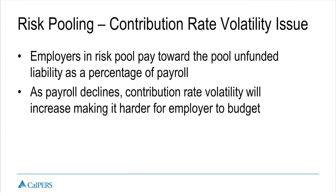The rate volatility issue arises because employers pay toward the risk pool's unfunded liability as a percentage of pay, so the contribution rate becomes more volatile as payroll shrinks. This would become extremely difficult to predict from year to year, since each employer's payroll shrinks at varying rates. If rates can't be projected somewhat accurately, it's very hard to budget for your pension plan each year.